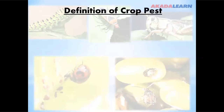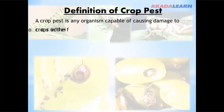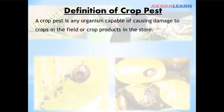Definition of crop pests: a crop pest is any organism capable of causing damage to crops in the field or to crop products in the store.